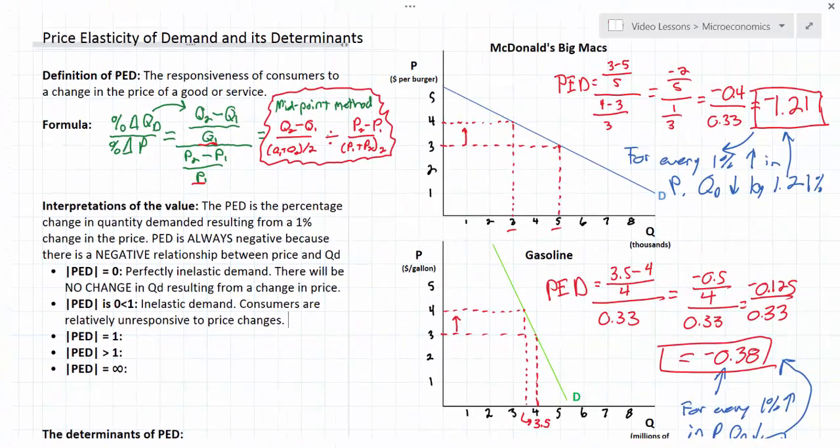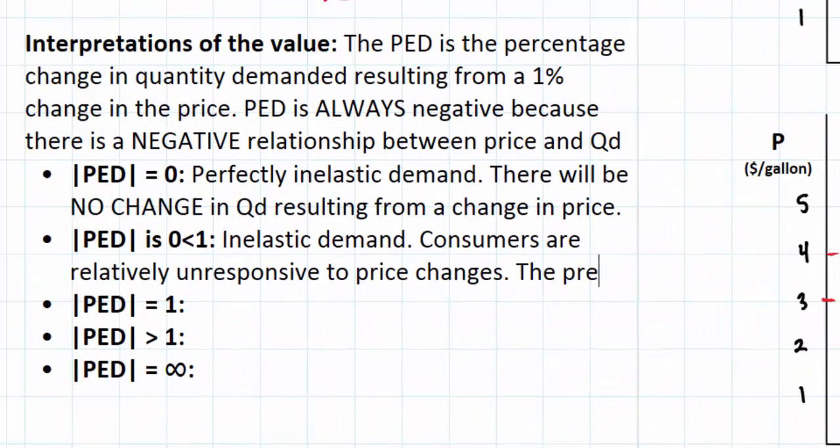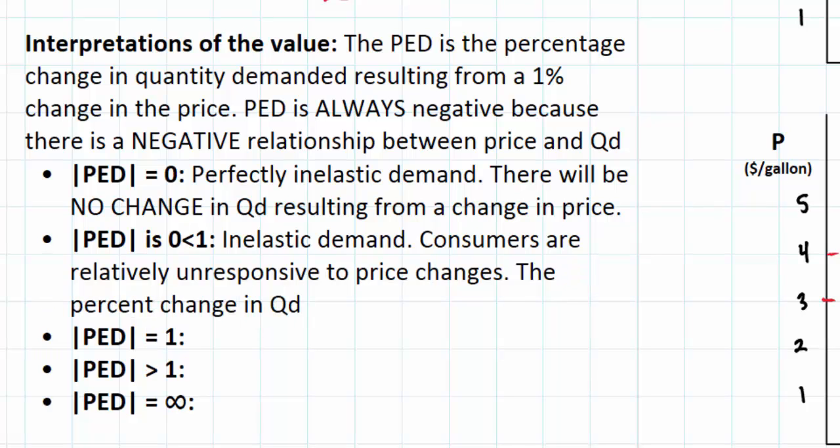Looking at our two goods, we can see that the demand for gasoline is relatively unresponsive to price changes. The absolute value of the PED coefficient is between 0 and 1 at 0.38. This means that the percent change in QD is less than the percent change in price.